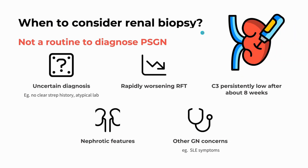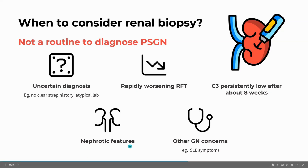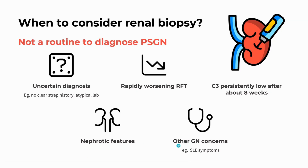When should we consider renal biopsy? It is not a routine requirement to diagnose post-strep GN. If you have the typical picture, recent evidence of GN, and transiently low C3, you can already make the diagnosis. However, consider biopsy when the diagnosis is uncertain — no clear strep infection history, no abnormal lab tests — or if there is rapidly deteriorating renal function, persistently low C3 after about 8 weeks, nephrotic features, or other glomerulonephritis concerns. Otherwise, it may not be needed routinely.